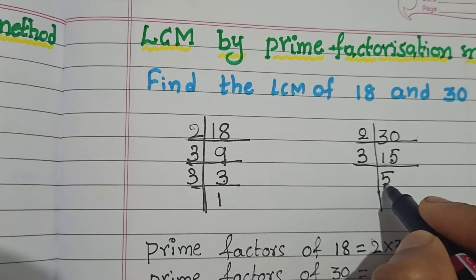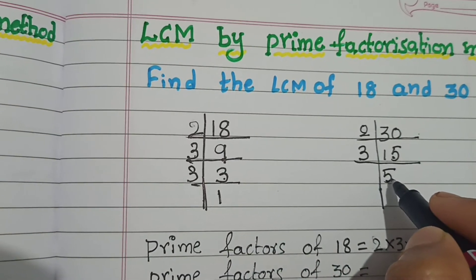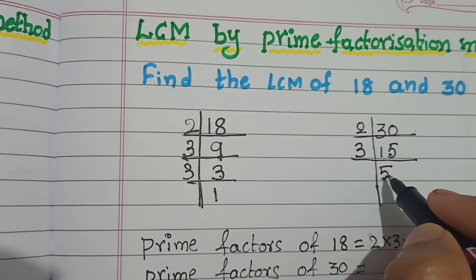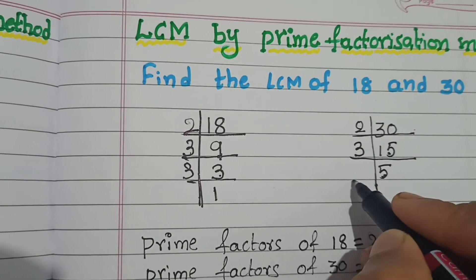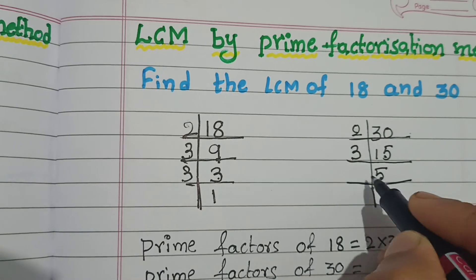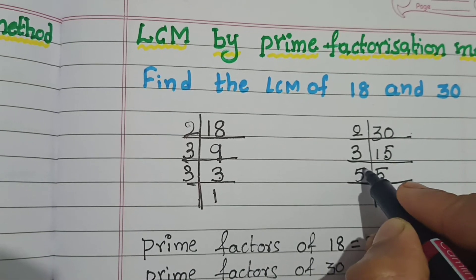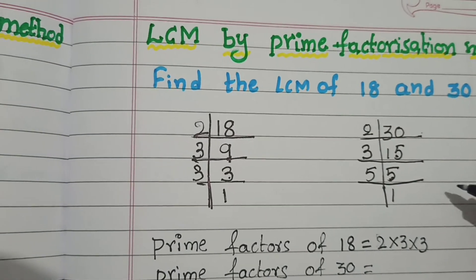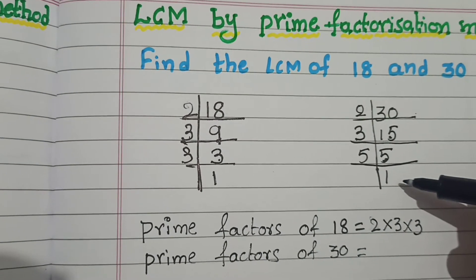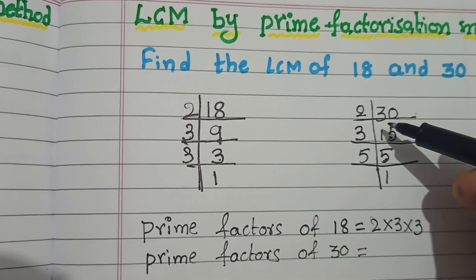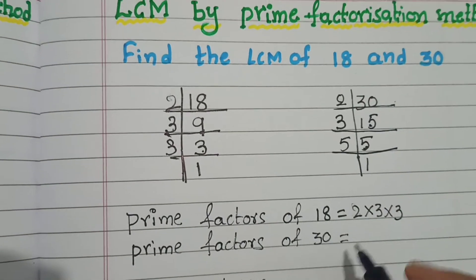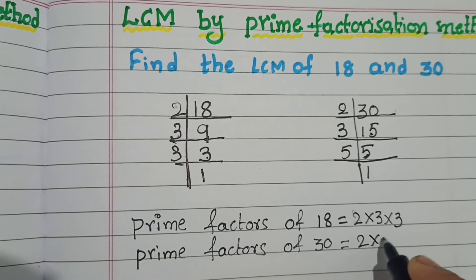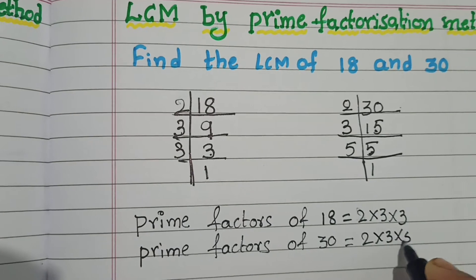Now divide 5 by prime number. It is not divisible by 2. It is not divisible by 3. Go for next prime number. Next prime number is 5. Now 5 ones are 5. After getting 1, stop here. The prime factors of 30 are 2 into 3 into 5.